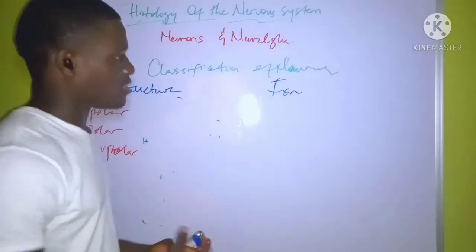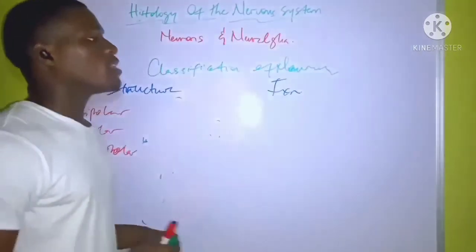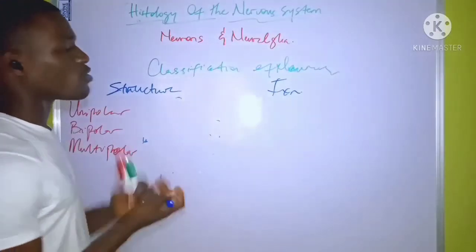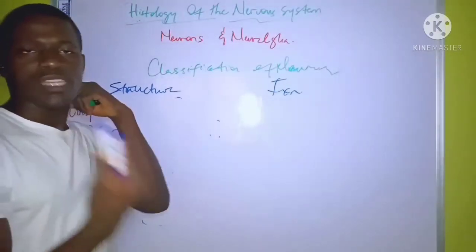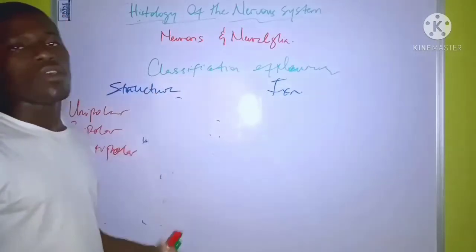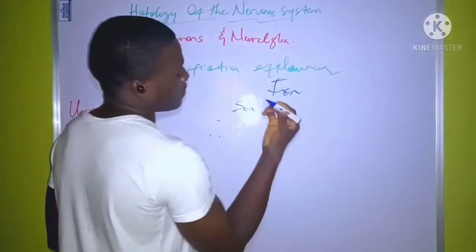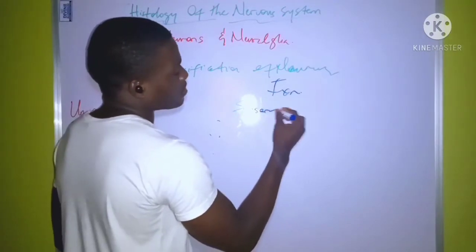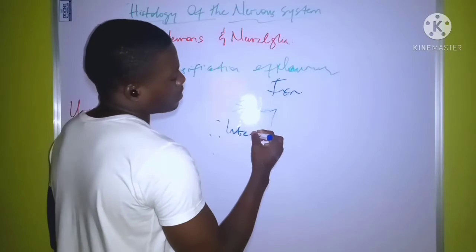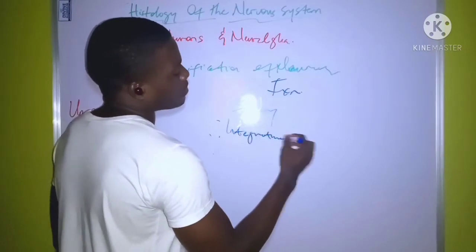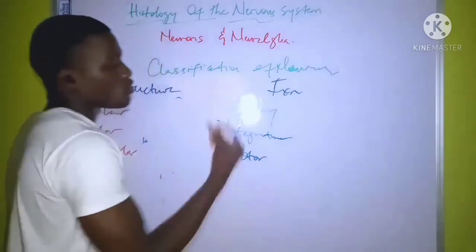The next topic is the classification of neurons based on their function, which is similar to the overall function of the nervous system. There are three types: you have the sensory neuron, the integrative neuron, and the motor neuron.